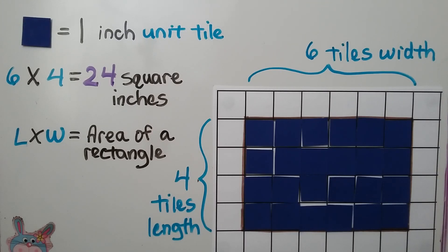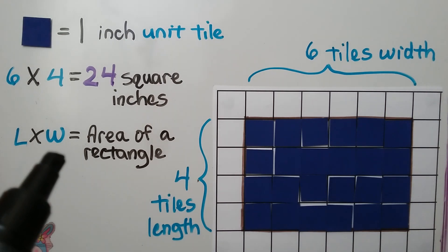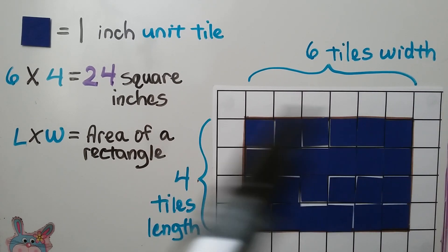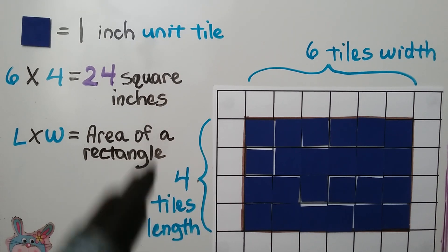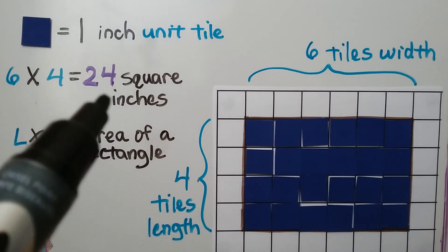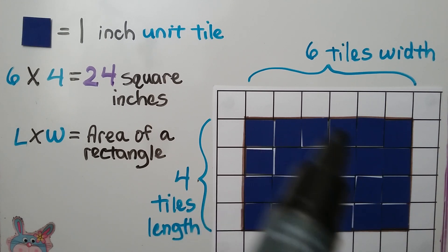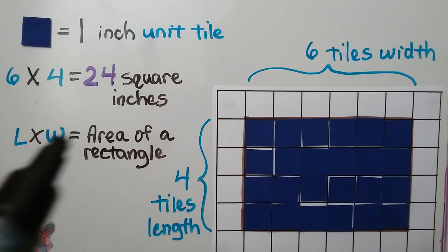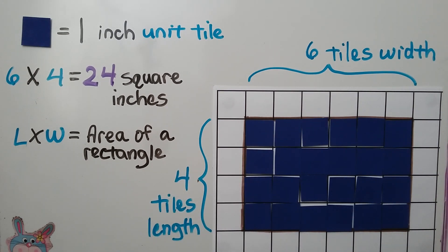We've learned before in fourth grade that we can find the area of a rectangle using the formula length times width — L times W. If this is six tiles and this is four tiles, we can do four times six or six times four and know that there are 24 square tiles here. If they're each one inch, it would be 24 square inches.